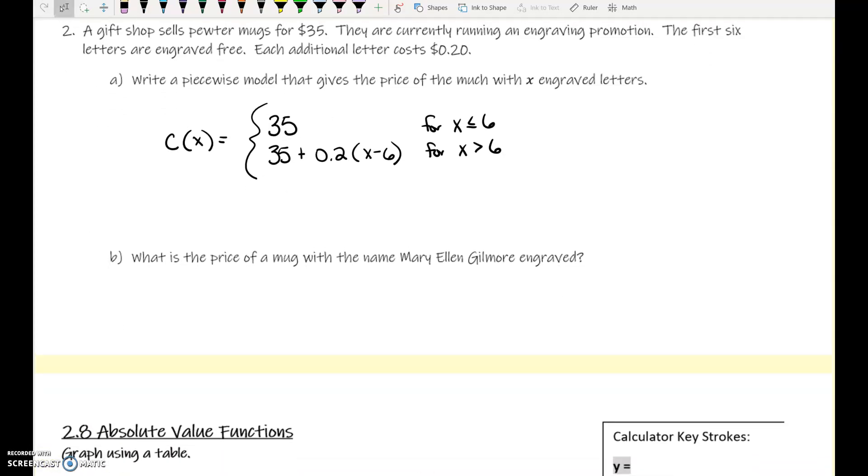Part B is actually using that piecewise function. What is the price of a mug with the name Mary Ellen Gilmore engraved? Where the heck did that name come from, I wonder? So how many letters is that? 16 letters. So we would definitely use the $35 plus 0.2. What is 16 minus 10? Or sorry, 16 minus 6 is 10. So 35 plus 0.2 times 10, which is 2, gives us 37. It would cost $37 for that mug.